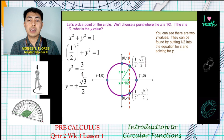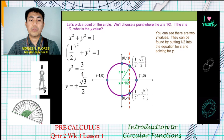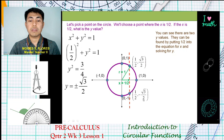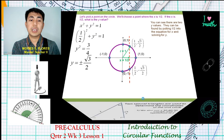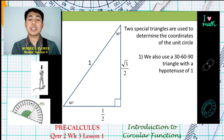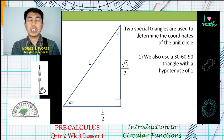So the coordinates are (1/2, √3/2) and (1/2, -√3/2). Another way to determine the coordinates of the unit circle is through the special triangles. The first special triangle is the 30-60-90 triangle.